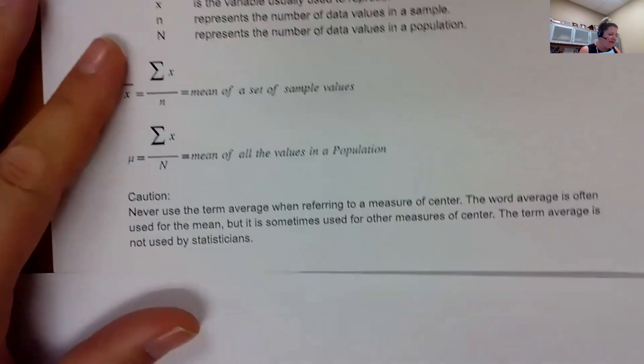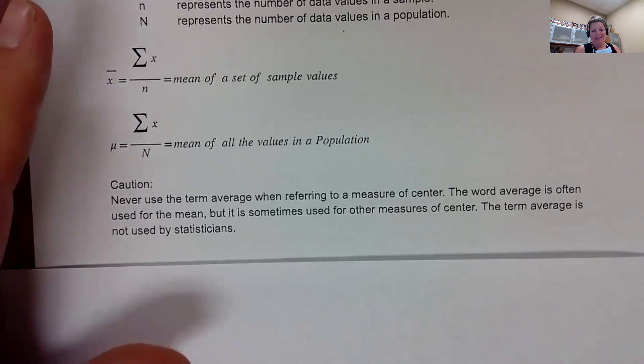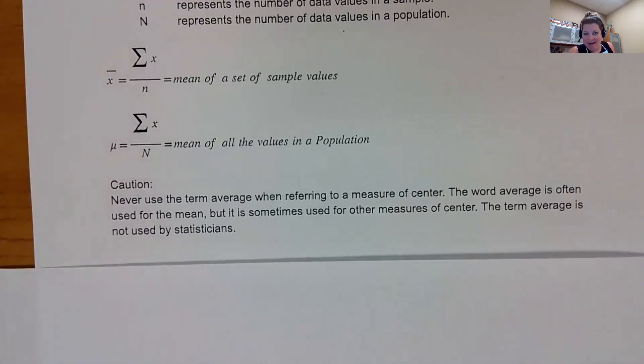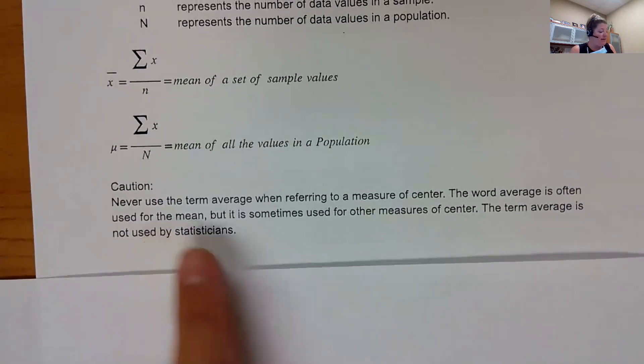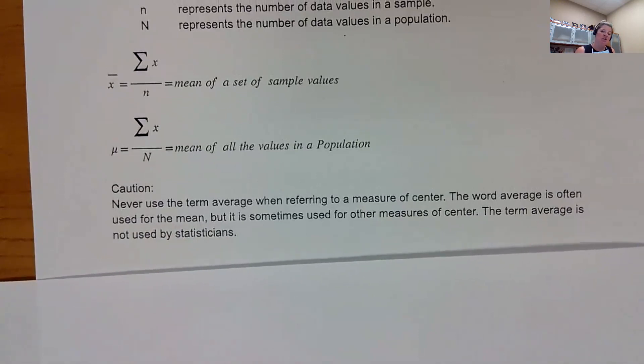Here's my big caution: never use the term average when you're referring to a measure of center. But what does Excel use for mean? Average. So if you're in Microsoft Excel and you want the mean, you type average, which is silly because average just means the middle. And it could be the median, the mode, the mean, the midrange, like any of the ways to find the center. The term average is not used by statisticians.